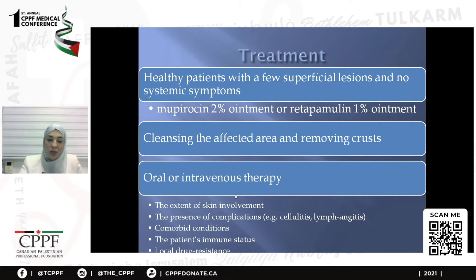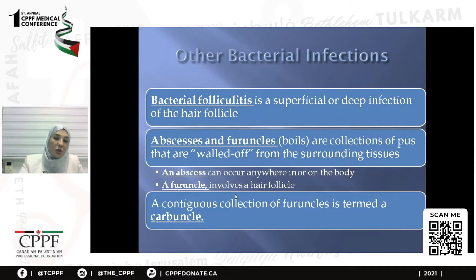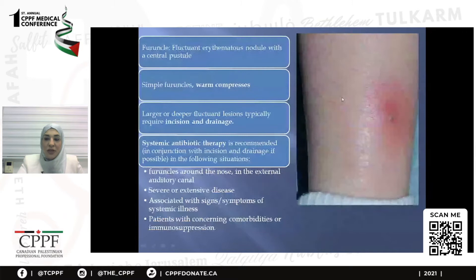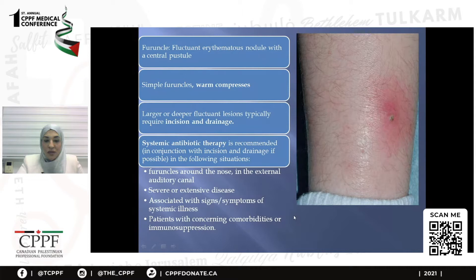Other bacterial infections include bacterial folliculitis, which is a superficial or deep infection of the hair follicle. Abscesses are collections of pus walled off from surrounding tissue. A furuncle involves a hair follicle, and a contiguous collection of furuncles is termed a carbuncle. Treatment is usually warm compresses, incision, and drainage. Systemic antibiotic therapy is recommended for furuncles around the nose or external auditory canal, severe or extensive disease with systemic signs, and patients with comorbidities or immunosuppression.